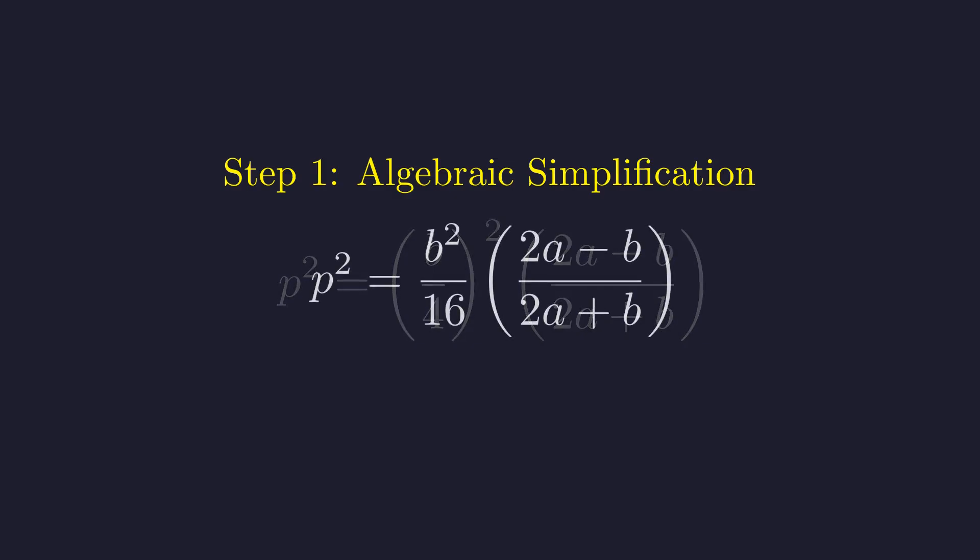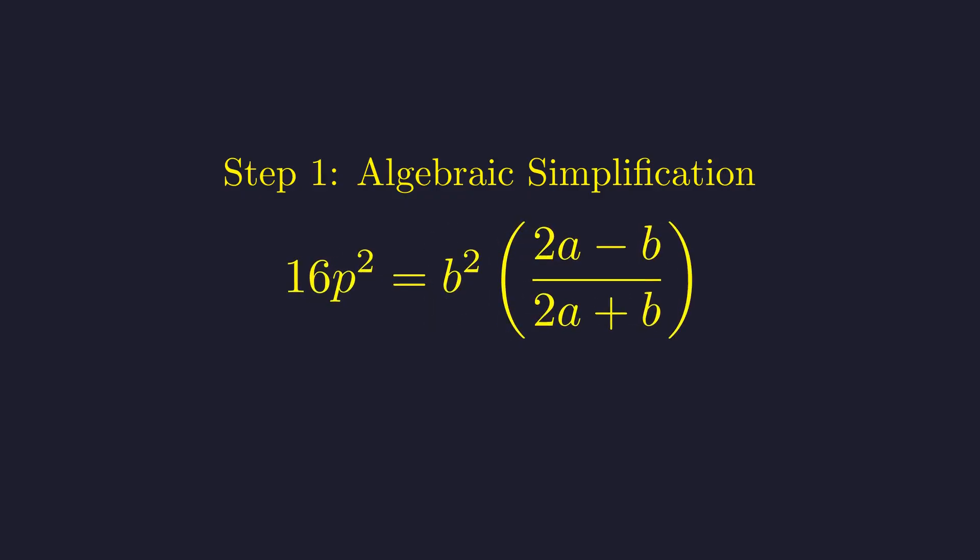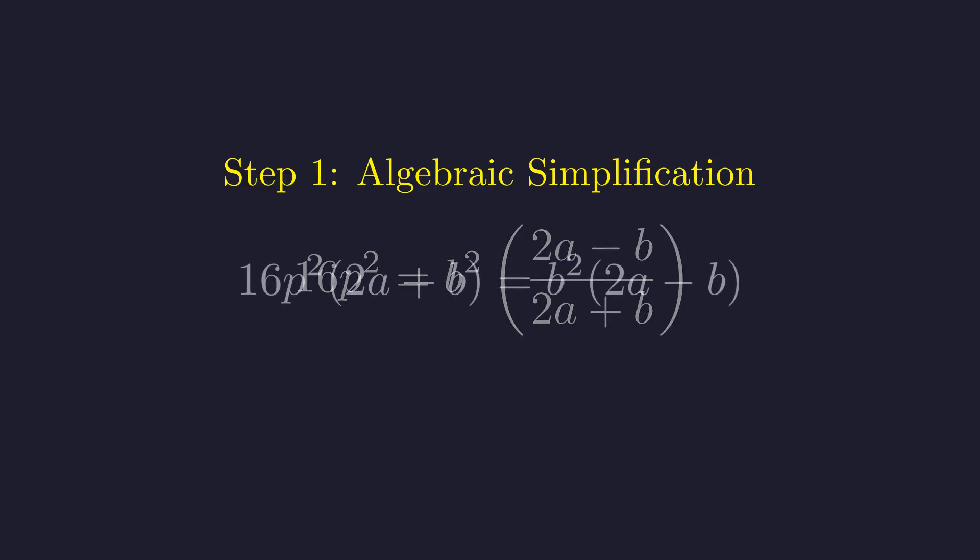Working out that square gives us b squared over 16. Now, fractions are annoying when you're thinking about integers, so let's clear these denominators. First, this 16. Multiply both sides by 16. And now let's deal with this remaining fraction. Multiply by 2a plus b, and we get this polynomial equation, much better.